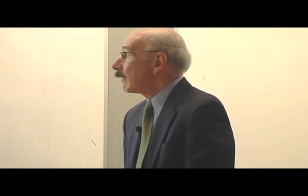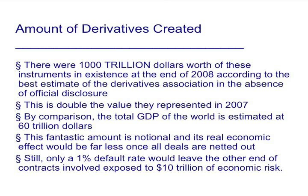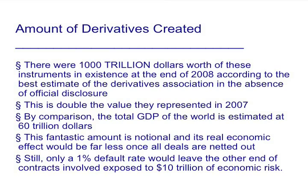Now, it's true this fantastic amount is notional, and its real economic effect would be far less once all deals are netted out. But in order for there not to be a problem, counterparties have to survive. And we see that counterparties are blowing up every day. So if only a 1% default rate occurred on these contracts, that would leave the other end of the contract exposed to $10 trillion worth of economic risk.